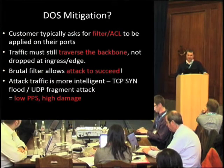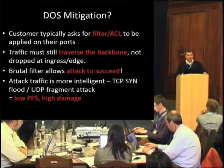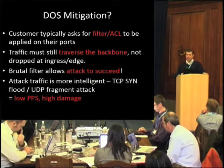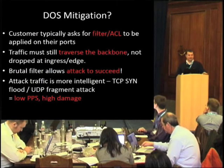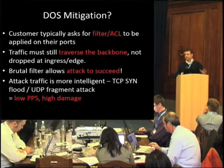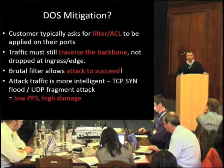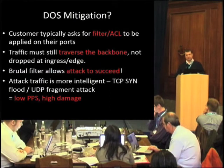Typically with DoS mitigation, customers may ask for a filter to be applied at their ports. But if you're just applying that at the customer edge, the traffic still has to traverse your backbone — it's not being dropped at the source. Whereas with FlowSpec, you can drop it at the entry point to your network in a single click. A blunt filter allows the attack to succeed enough for service to be suspended, but with more finely grained controls you can maintain service for customers without disabling their access altogether. You can also use it to build rules that limit the effects of more intelligent attack vectors such as TCP SYN floods and UDP fragment attacks.